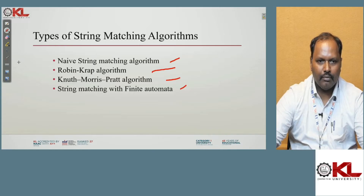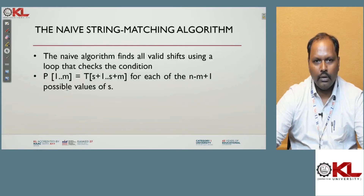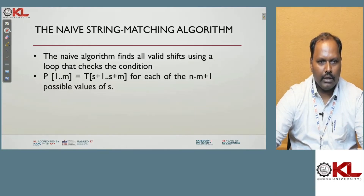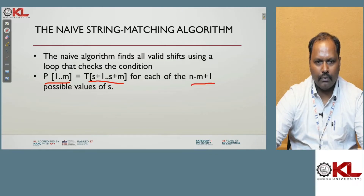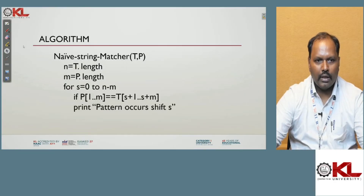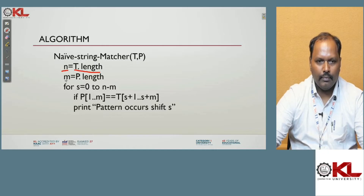The Naive string matching algorithm works by finding the validation of shifts using a loop to check conditions. The pattern P[1 to m] is compared to text window T[s+1 to s+m] for each of n minus m plus 1 possibilities. The algorithm: N is the total length of the text, M is the pattern length, shift S starts at 0, and it runs N minus M times.